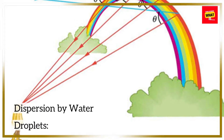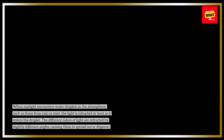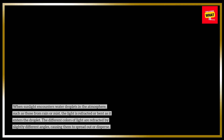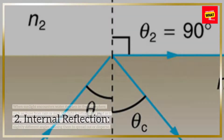Dispersion by water droplets. When sunlight encounters water droplets in the atmosphere, such as those from rain or mist, the light is refracted or bent as it enters the droplet. The different colors of light are refracted by slightly different angles, causing them to spread out or disperse.